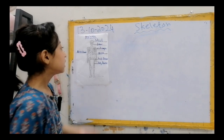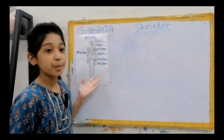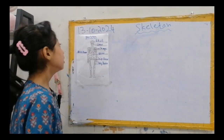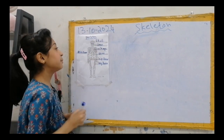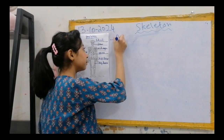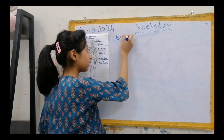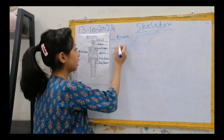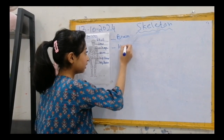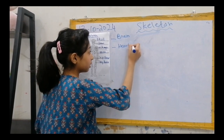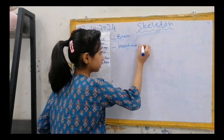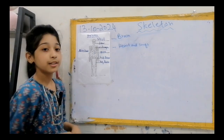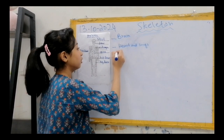You know friends, the skeleton can also protect important parts inside our body. This is a skull — it protects our brain. And this is a rib cage — it protects our heart and lungs. And this is a spine, it's also called a backbone.